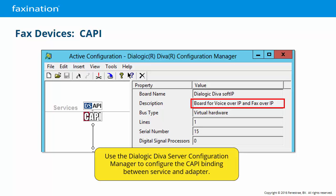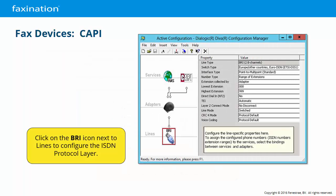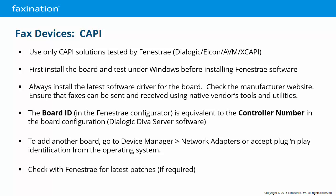You always want to get the latest version of the Dialogic Diva software from the Dialogic website. Remember that unlike with Brooktrout cards, all of the line configuration for CAPI cards is done within the CAPI software and not the FaxNation CAPI connector. Regarding CAPI devices: use only CAPI solutions tested by Finestre. Install the fax board and its software and test independently of FaxNation. Always download and install the latest software for the board. The board ID within FaxNation is equal to the controller number within the Diva software. The cards are plug and play and should be automatically configured by the operating system.